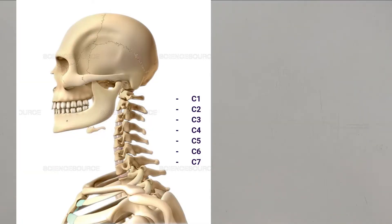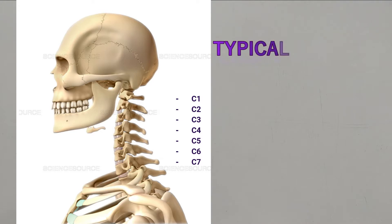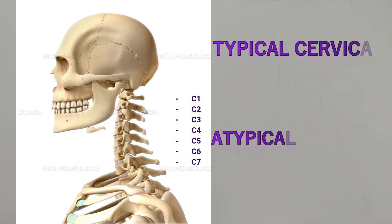The cervical vertebrae are seven in number and they form the axial skeleton of the neck. The seven cervical vertebrae are classified into typical cervical vertebrae and atypical cervical vertebrae.